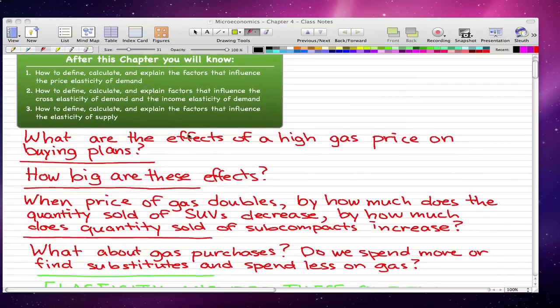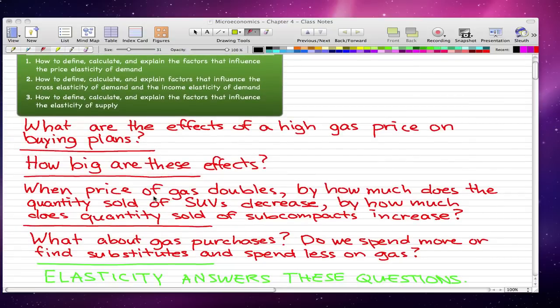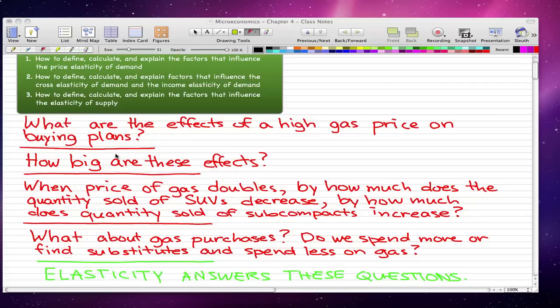Now these are the kind of questions that elasticity answers. What are the effects of a high gas price on buying plans? We know that some of the biggest effects at a car dealers lot is where SUVs remain unsold while subcompacts sell in big quantities because of the differences in gas mileage. How big are these effects?